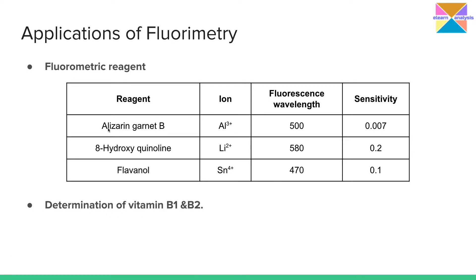As fluorometric reagents, we use alizarin garnet R for estimation of aluminum ions at 500 nanometers with high sensitivity. Similarly, 8-hydroxyquinoline and flavanol are used for estimating particular ions at specific wavelengths with high sensitivity. An important pharmaceutical application is the determination of vitamin B1 (thiamine) and vitamin B2 (riboflavin). The estimation of these two vitamins is done by the fluorescence method, which is one of the most accurate and sensitive methods known.